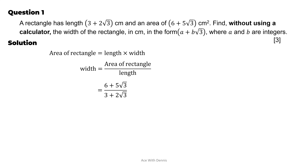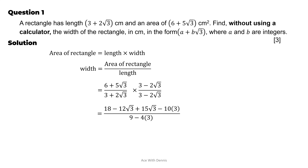Then we rationalize this fraction by multiplying (3 minus 2√3) over (3 minus 2√3). We expand and simplify: we get 18 minus 12√3 plus 15√3 minus 10 times 3, over 9 minus 4 times 3. Simplifying further gives negative 12 plus 3√3 over negative 3. Dividing numerator and denominator by negative 3, we get 4 minus √3 cm. This is the answer.